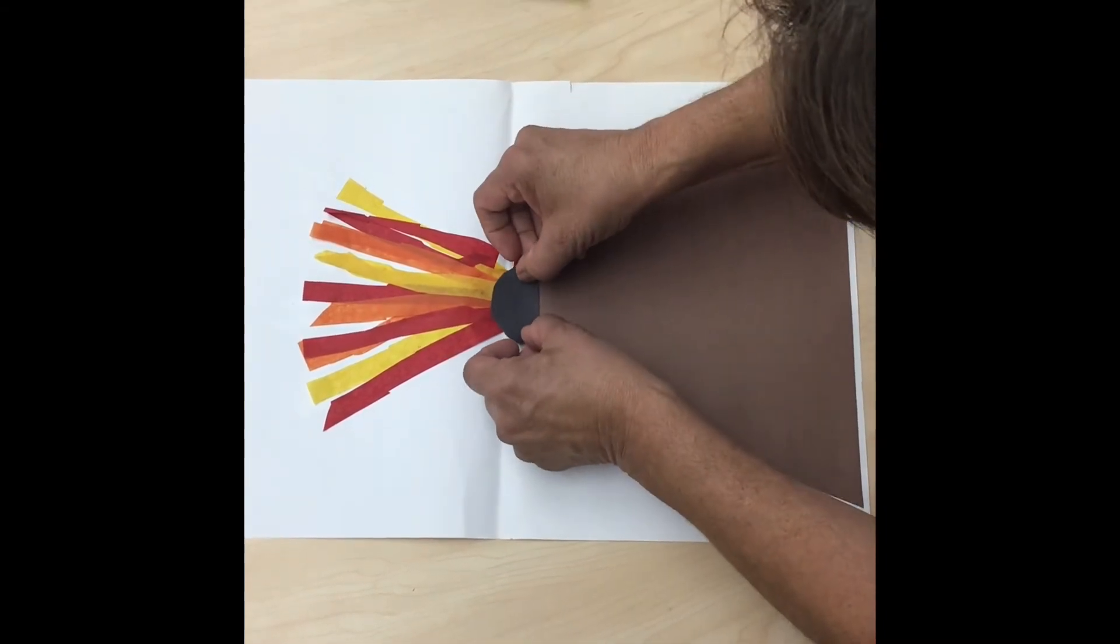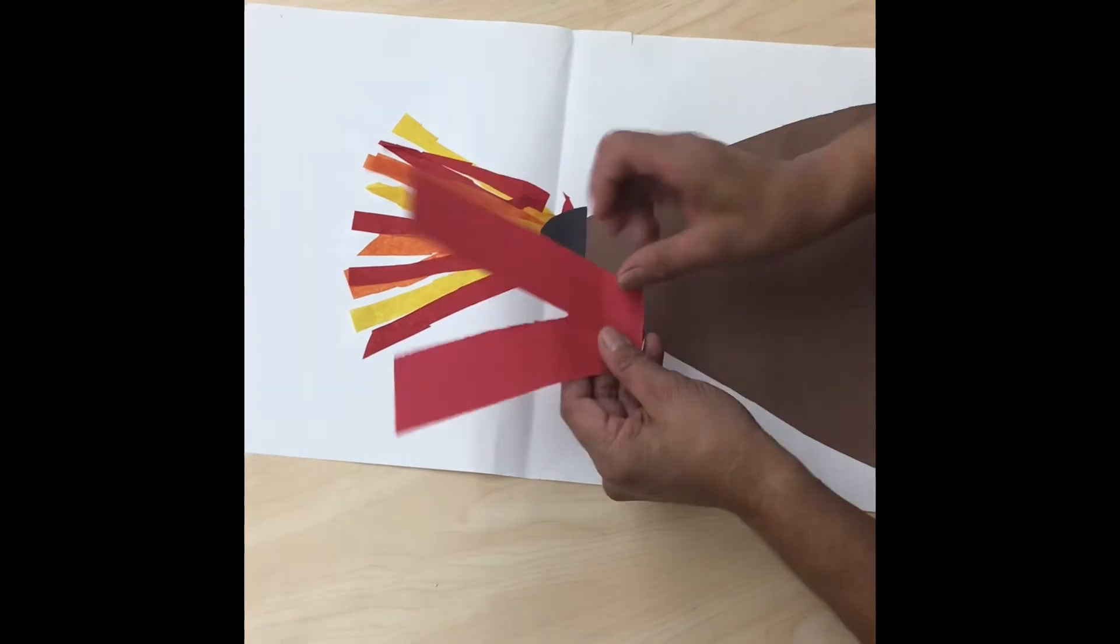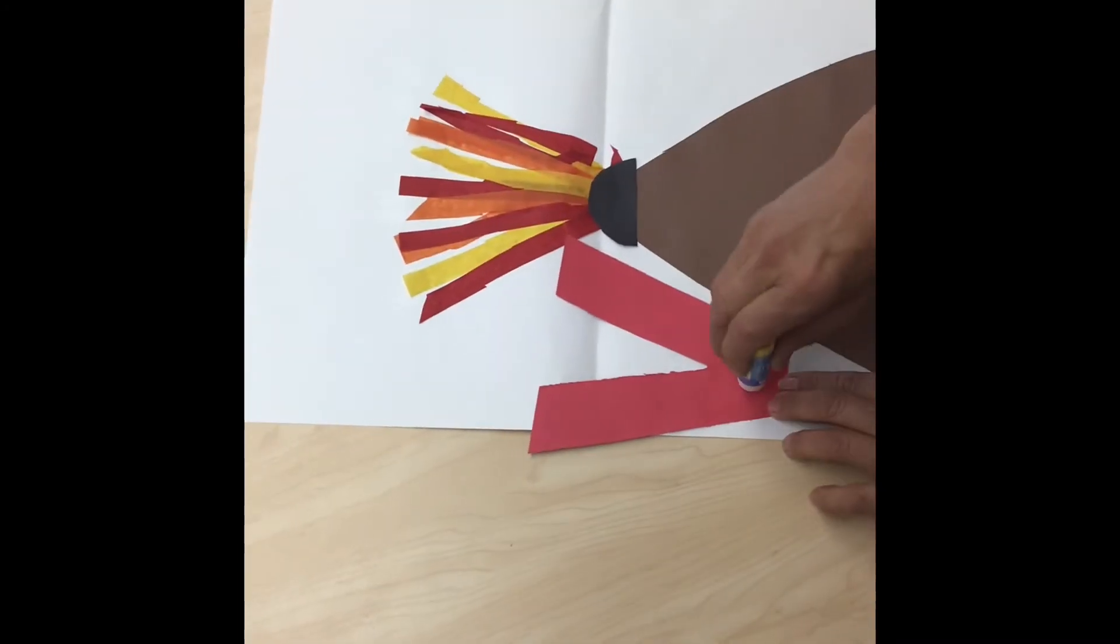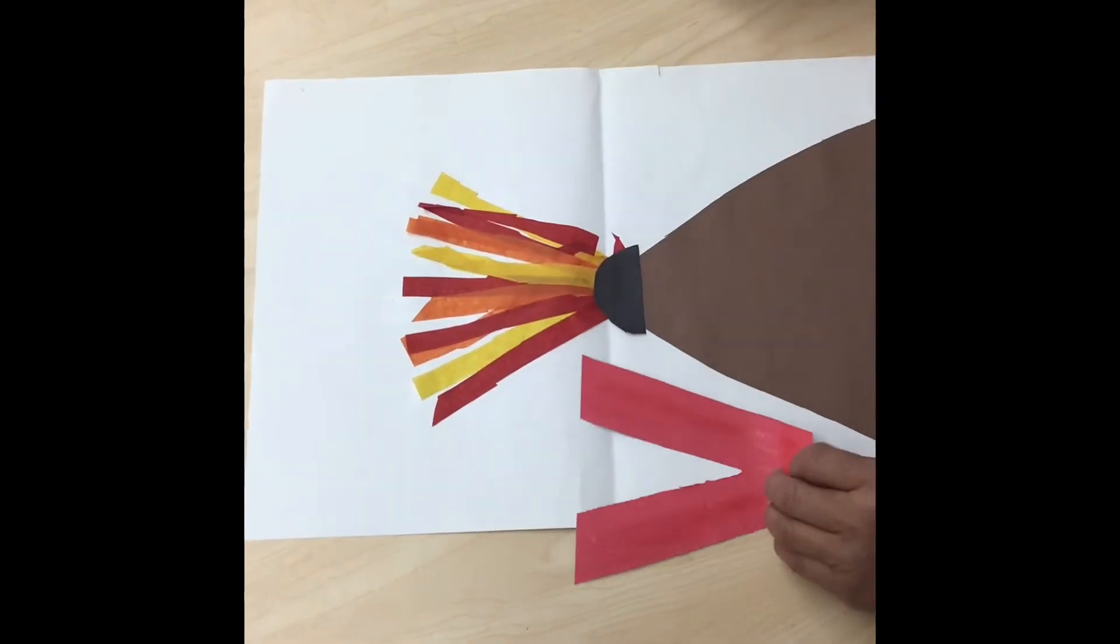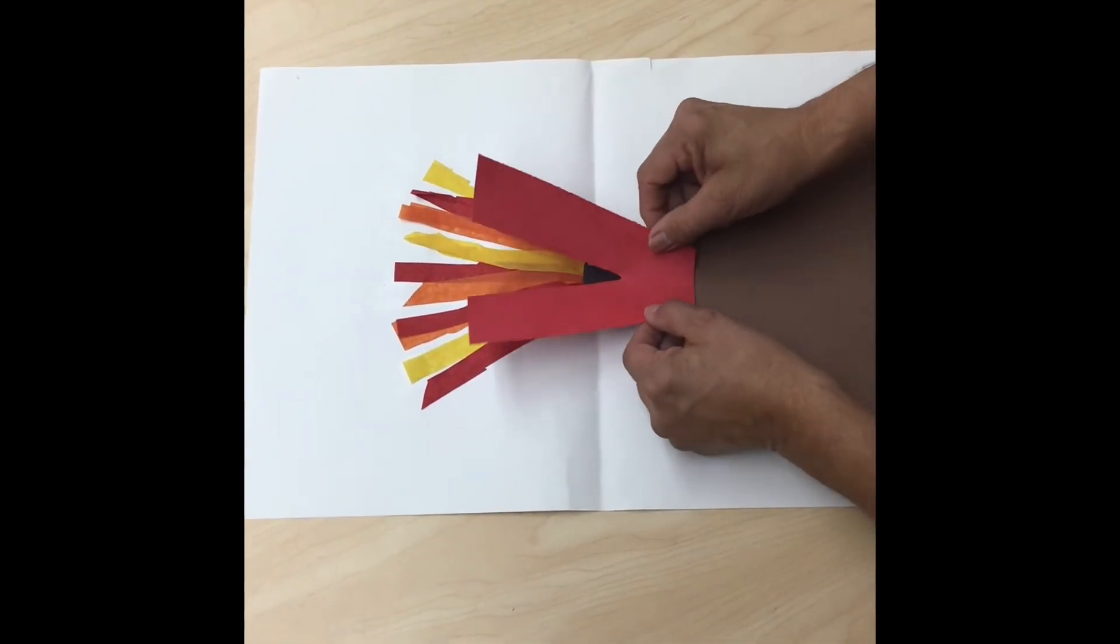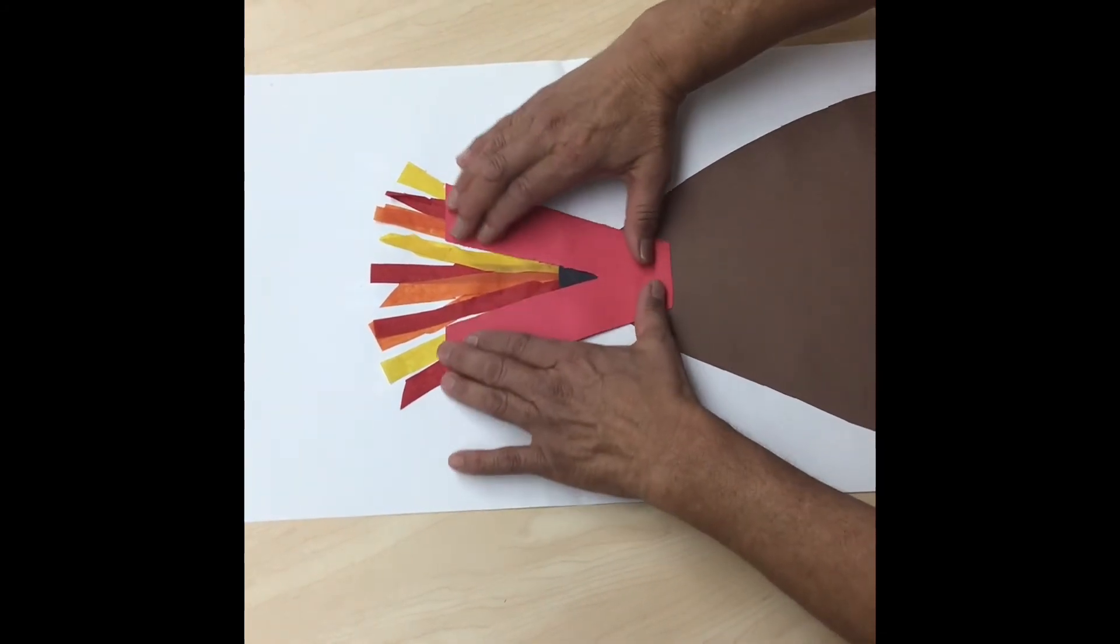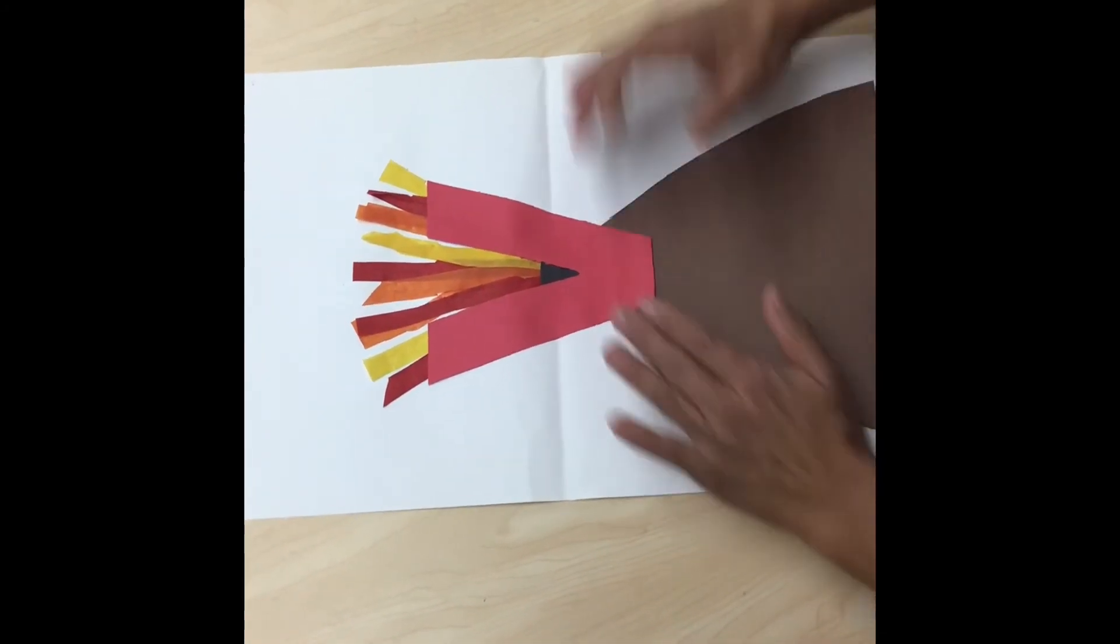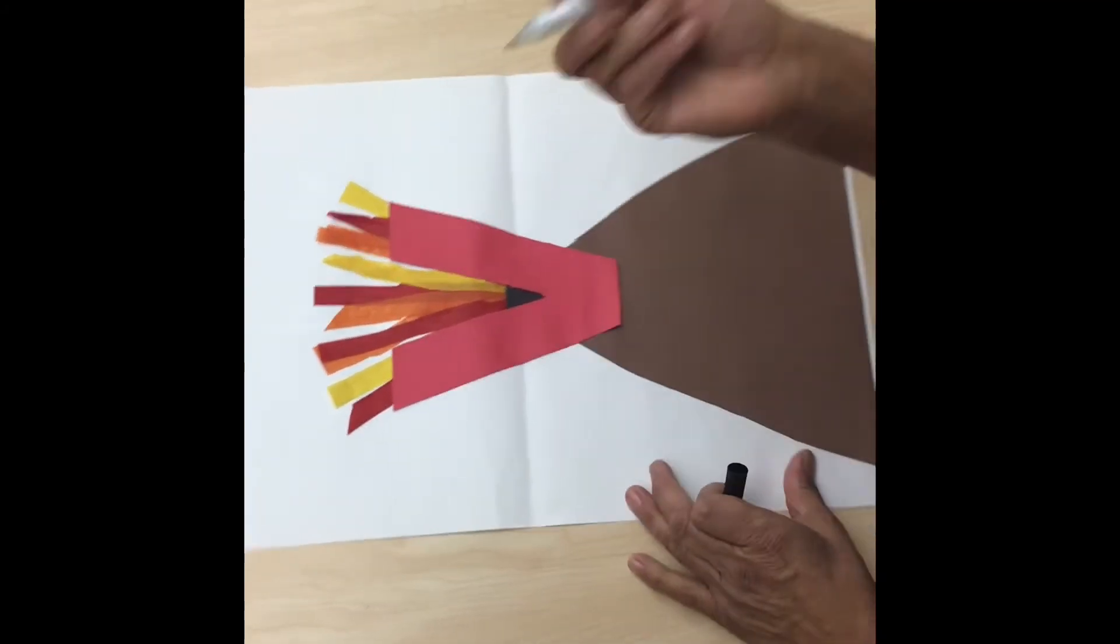Right there. Now we're gonna need our lowercase letter V. We're gonna glue it on top of the volcano, on the very top and on top of the lava.